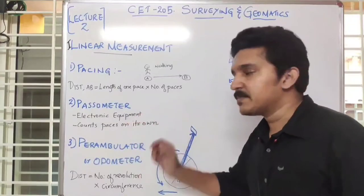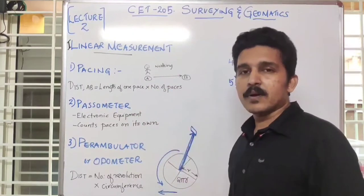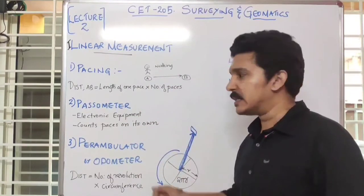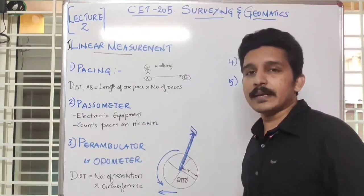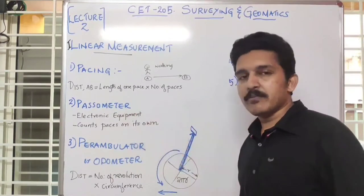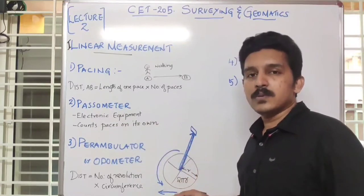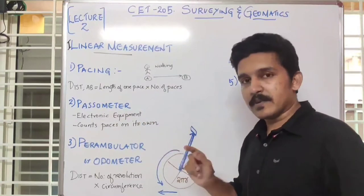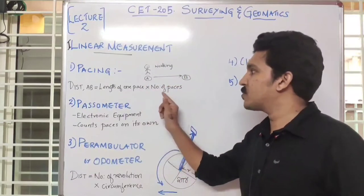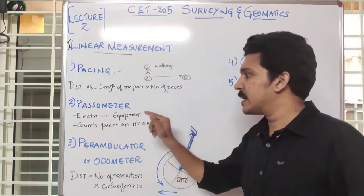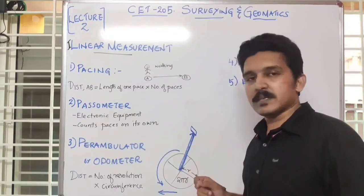The second method is the passometer. The passometer is more or less similar to pacing. What happens here is, in a passometer, we don't have to calculate the number of paces we made. It uses an electronic device that counts the paces on its own. So it is similar to pacing — we still walk from point A to point B — but we don't have to count the number of paces; the electronic equipment does this on its own.